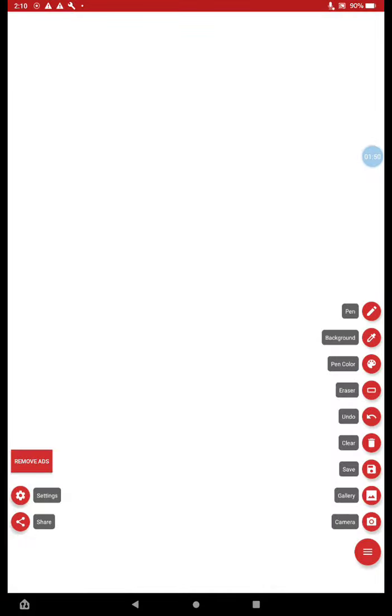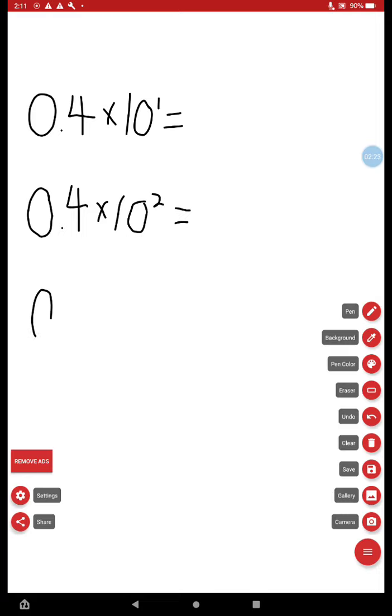Let's say I have a number, 0.4. And I'm going to say 0.4 times 10 to the first. I'm also going to write 0.4 times 10 to the second. And finally, 0.4 times 10 to the third.